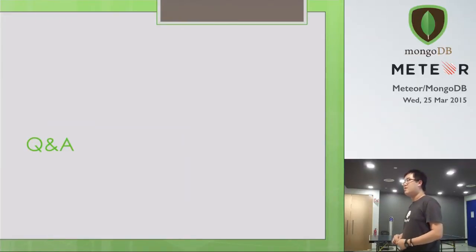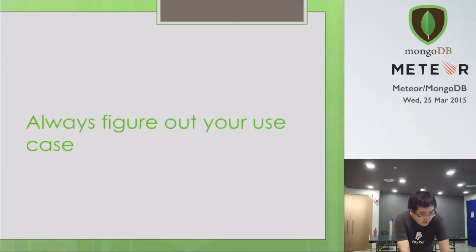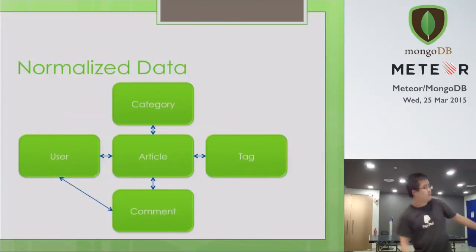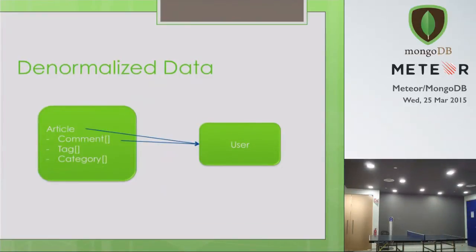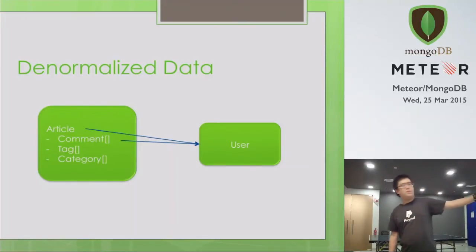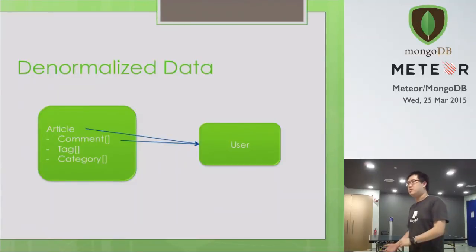Can you do a hybrid? Yes, you can. For the blog post example, comments, tags, and categories are all embedded, but the user is a reference. It doesn't make sense to store the user inside every comment and article because it happens too many times and if you want to update the user, you'd have to update everywhere. So in that case it makes more sense to use a reference. But for the comments themselves, embedding works better.